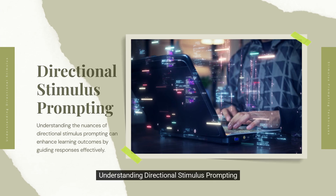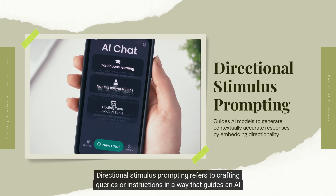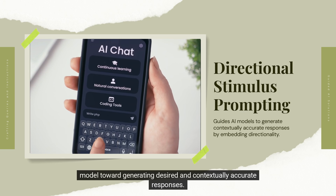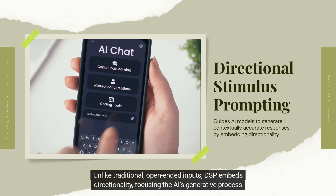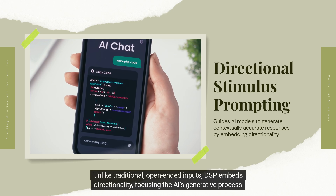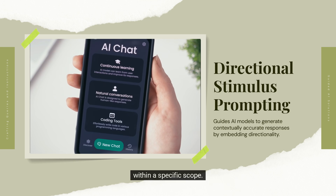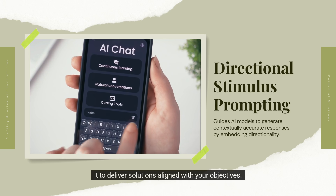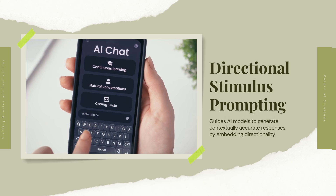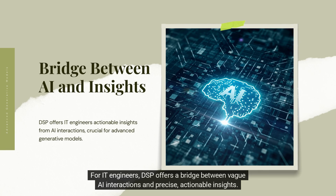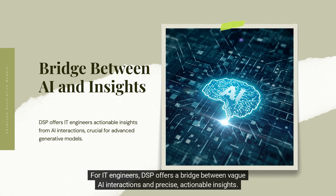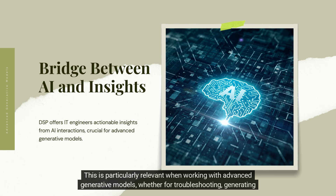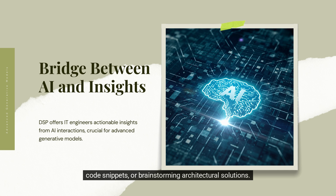Directional Stimulus Prompting refers to crafting queries or instructions in a way that guides an AI model toward generating desired and contextually accurate responses. Unlike traditional open-ended inputs, DSP embeds directionality, focusing the AI's generative process within a specific scope. Think of it as providing the AI with both a compass and a map — you're not just asking for help, but guiding it to deliver solutions aligned with your objectives. For IT engineers, DSP offers a bridge between vague AI interactions and precise, actionable insights, particularly for troubleshooting, generating code snippets, or brainstorming architectural solutions.